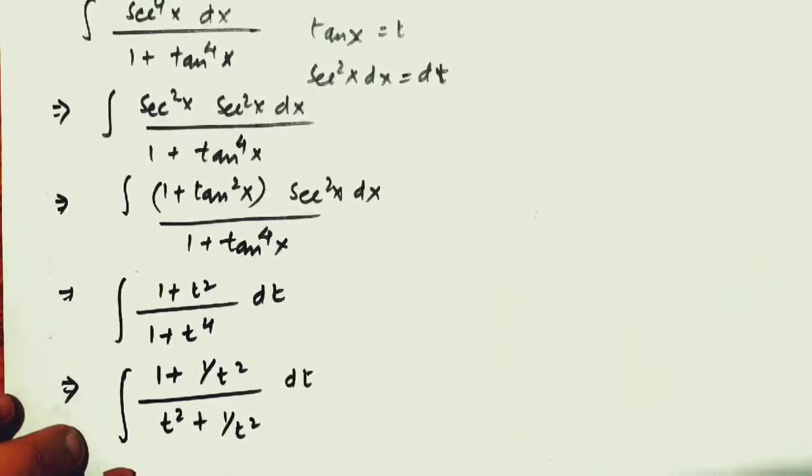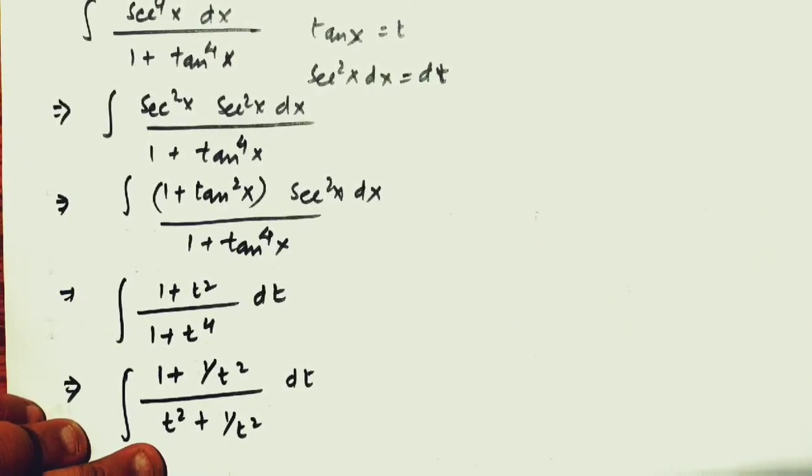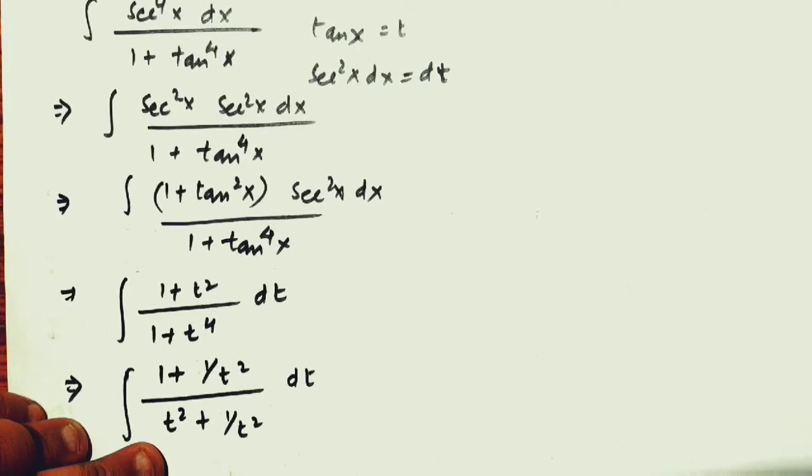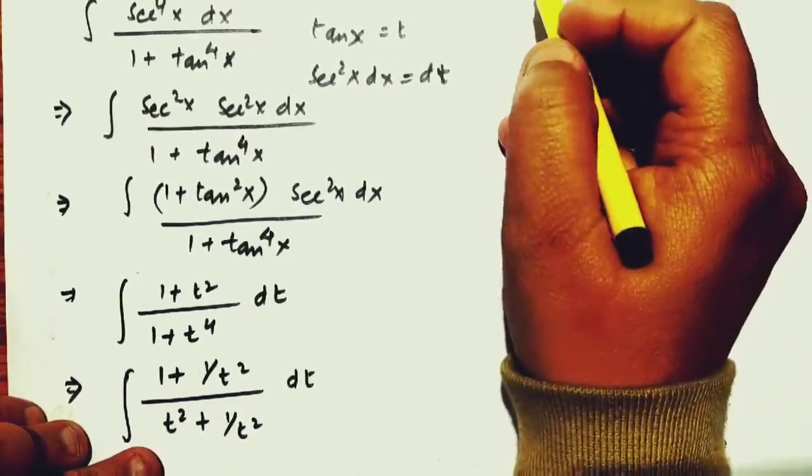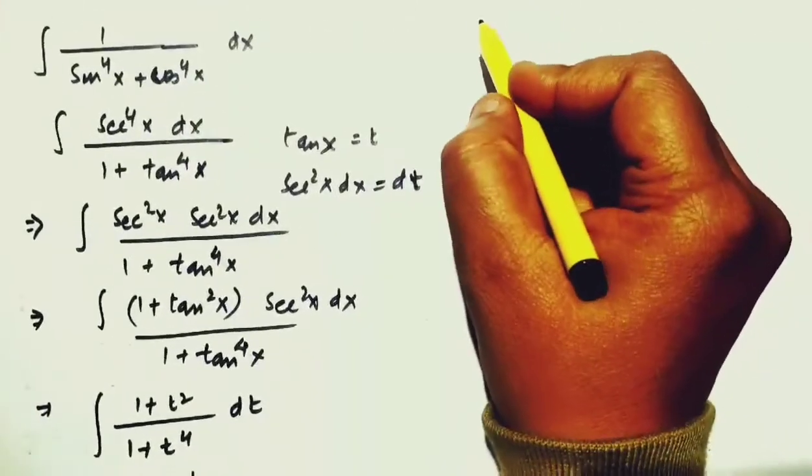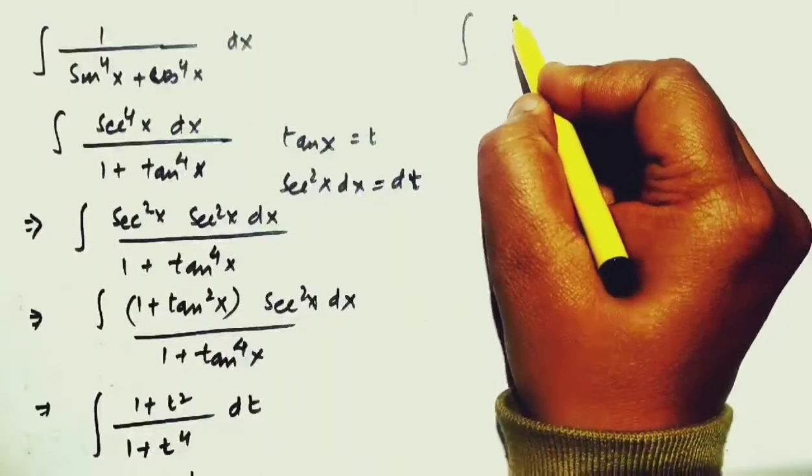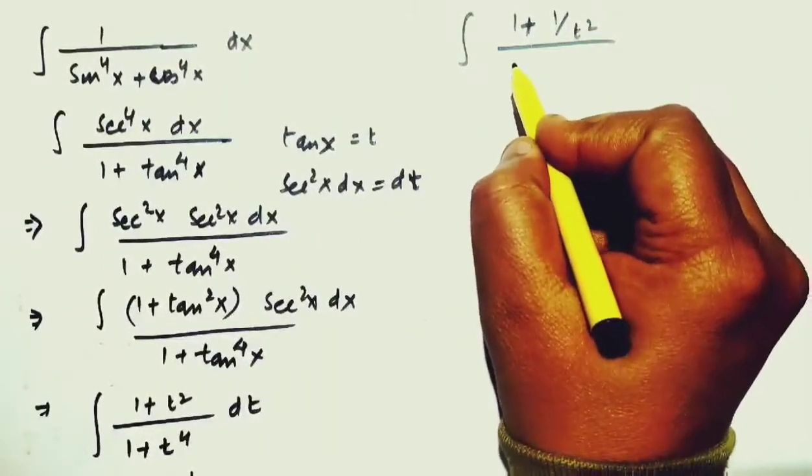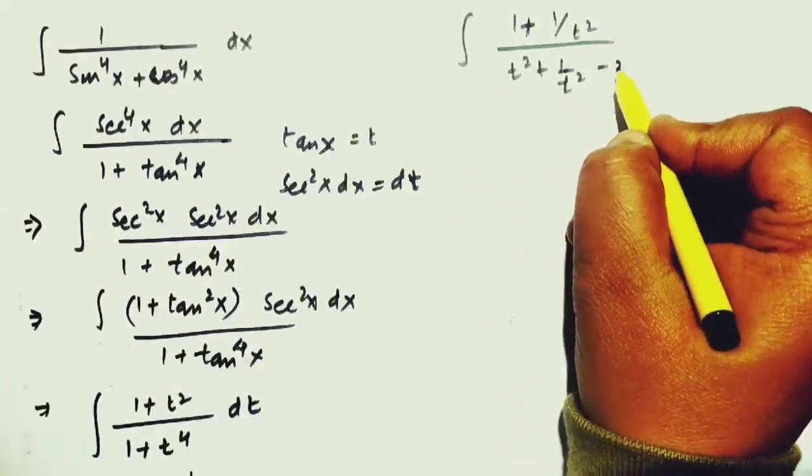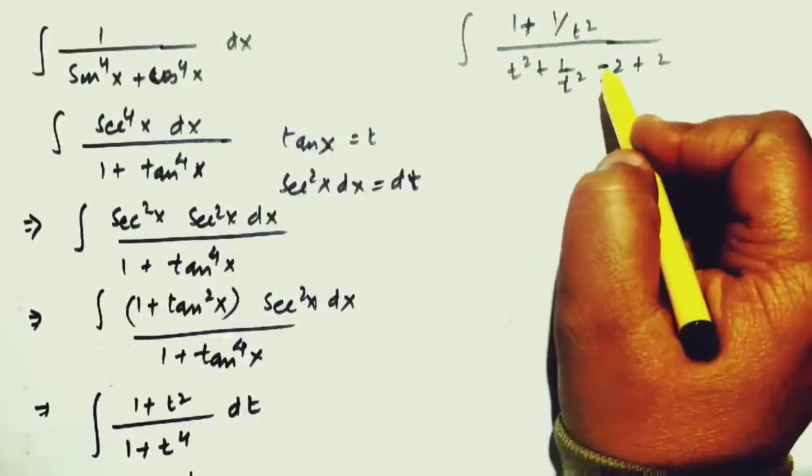Toh, isme kya karenge? Niche wala hum perfect square banane ki koshish karenge. Aur, aisa perfect square banayenge ki niche hum kuch substitute karain aur ye kuch replacement ho. So, we will try to look at integral of 1 plus 1 over t square, and this will be t square plus 1 by t square minus 2 and plus 2.